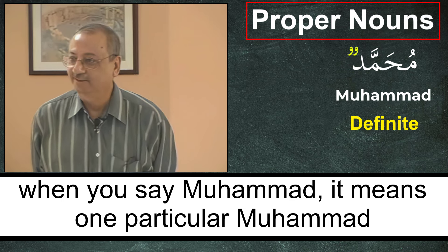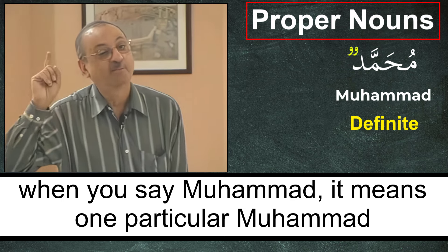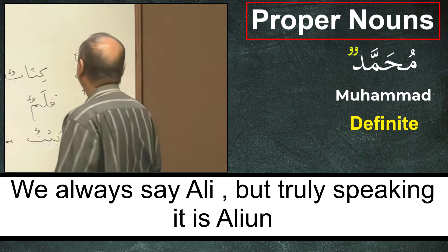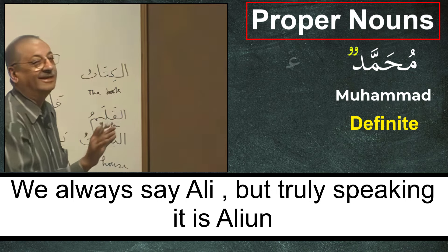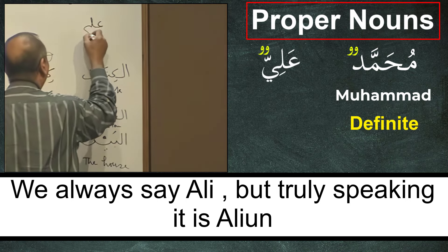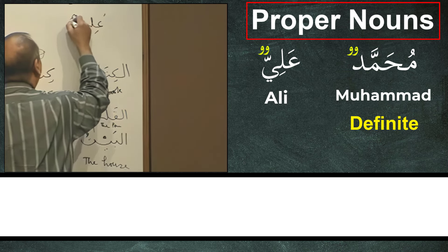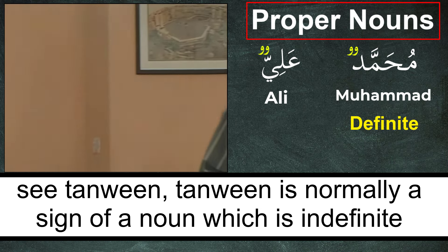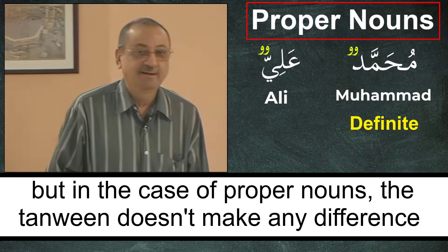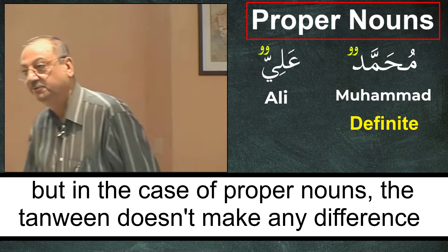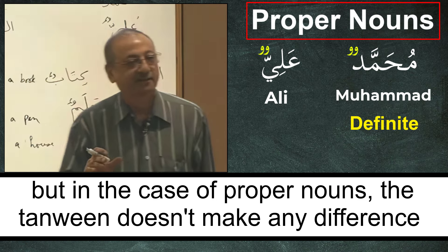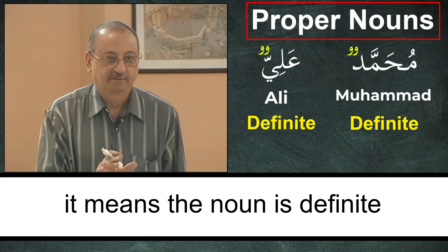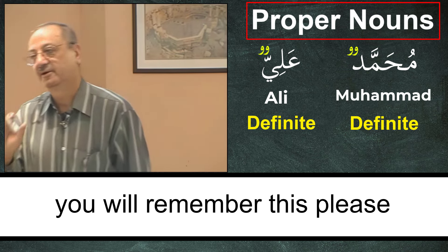When you say Muhammad, it doesn't mean any Muhammad — it means one particular Muhammad. If I say 'Ali', how do you write Ali? We always say Ali, but truly speaking it is 'Aliyyun'. See the Tanwin? Tanwin is normally the sign of a noun which is indefinite. But in the case of proper nouns, the Tanwin doesn't make any difference — the noun is still definite. You will remember this, please.